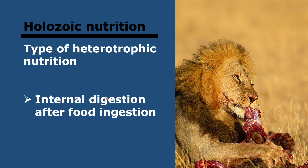A type of heterotrophic nutrition is holozoic nutrition, which means that digestion happens internally once the food has been ingested — the food is swallowed before being fully digested. The sequence is: ingestion, digestion, absorption, assimilation — where you use digested foods to synthesize macromolecules — and then egestion, which is getting rid of undigested material from the end of the gut. Holozoic nutrition is what we do, for example.